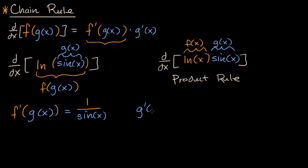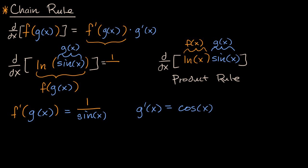We are not done — we need to take this and multiply it times g'(x). What is g'(x)? The derivative of sine of x with respect to x is cosine of x. So in this example, the derivative is going to be 1/sine(x) — which is the first part — times cosine of x. It is 1/sine(x) times cosine of x.